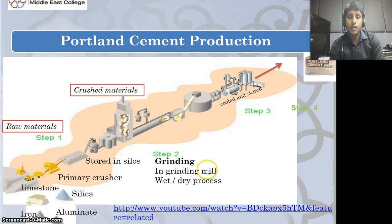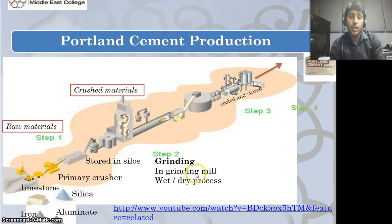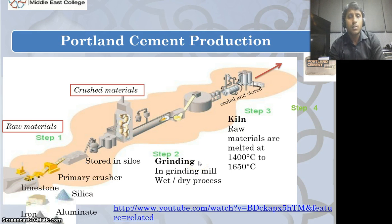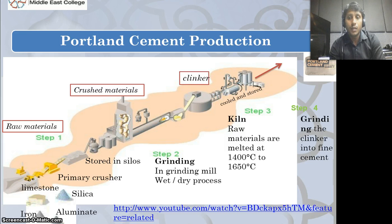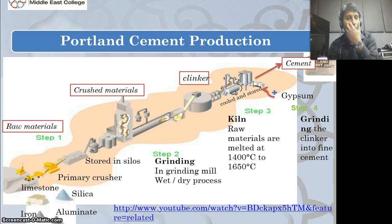The next step is grinding in a grinding mill, where all materials are mixed and ground together. We have two types of process: wet process and dry process — you can learn more about these in future subjects. Next, the raw materials are melted in the kiln at 1400 to 1650 degrees centigrade. The result is clinker. Once we do grinding of the clinker, it turns into fine cement. Finally, gypsum is added at the end, and the outcome is the cement.